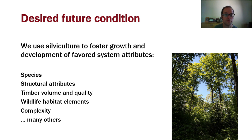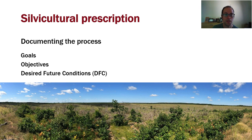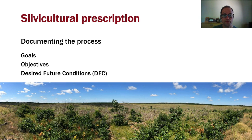We communicate our silvicultural decisions, intent, and plans through a prescription. The purpose of a prescription is to document our thinking and the applied ecology and process we intend to use as we treat that stand. A prescription generally includes the goals and objectives we have in mind, as well as the desired future condition and a schedule and description of treatments we intend to implement throughout the life of that stand — from before initial regeneration all the way through to final harvest.